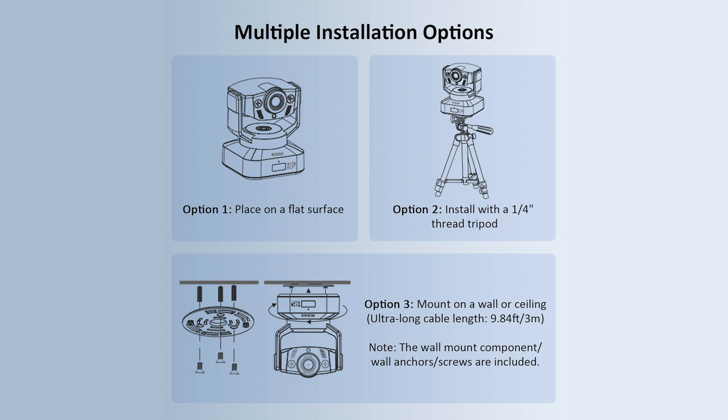The N990 can be installed on a tripod, mounted on a wall or ceiling, or placed on a flat surface for use.